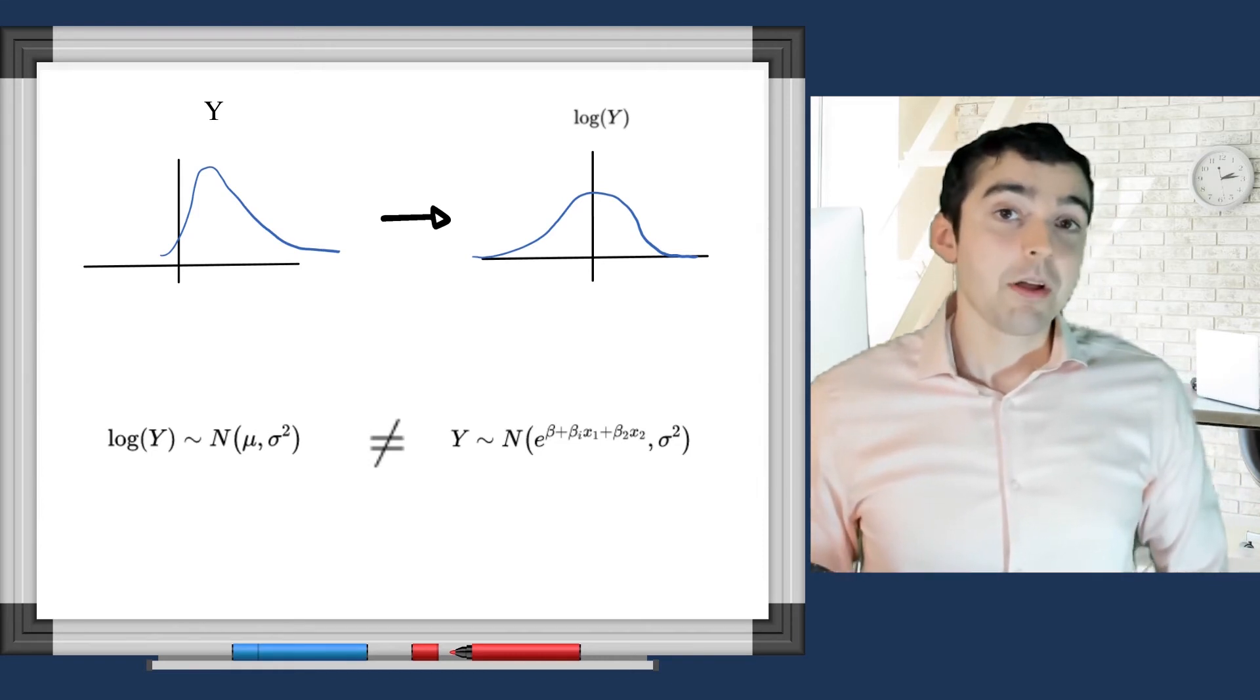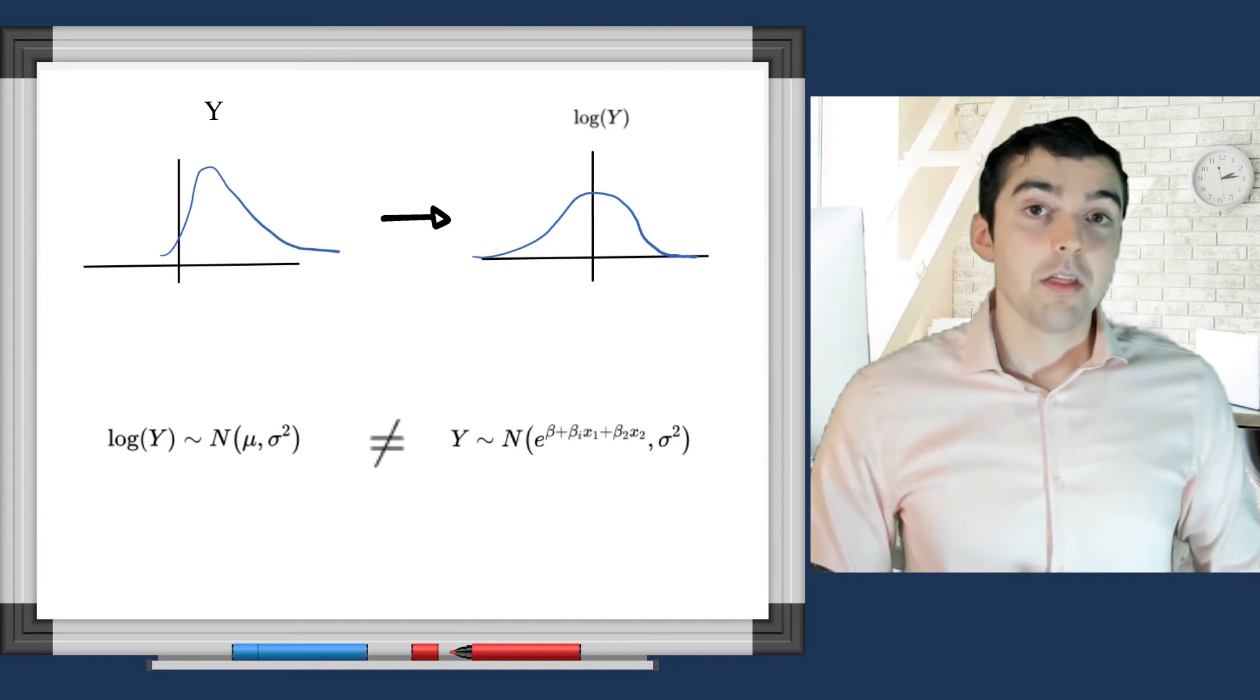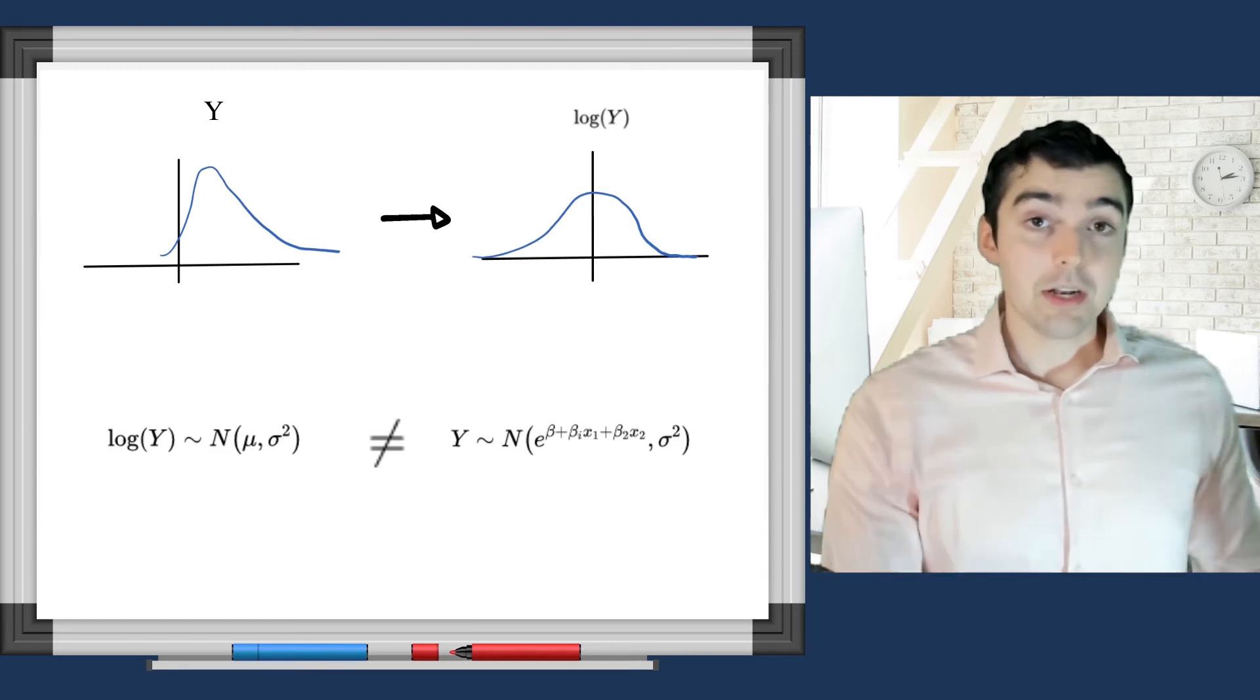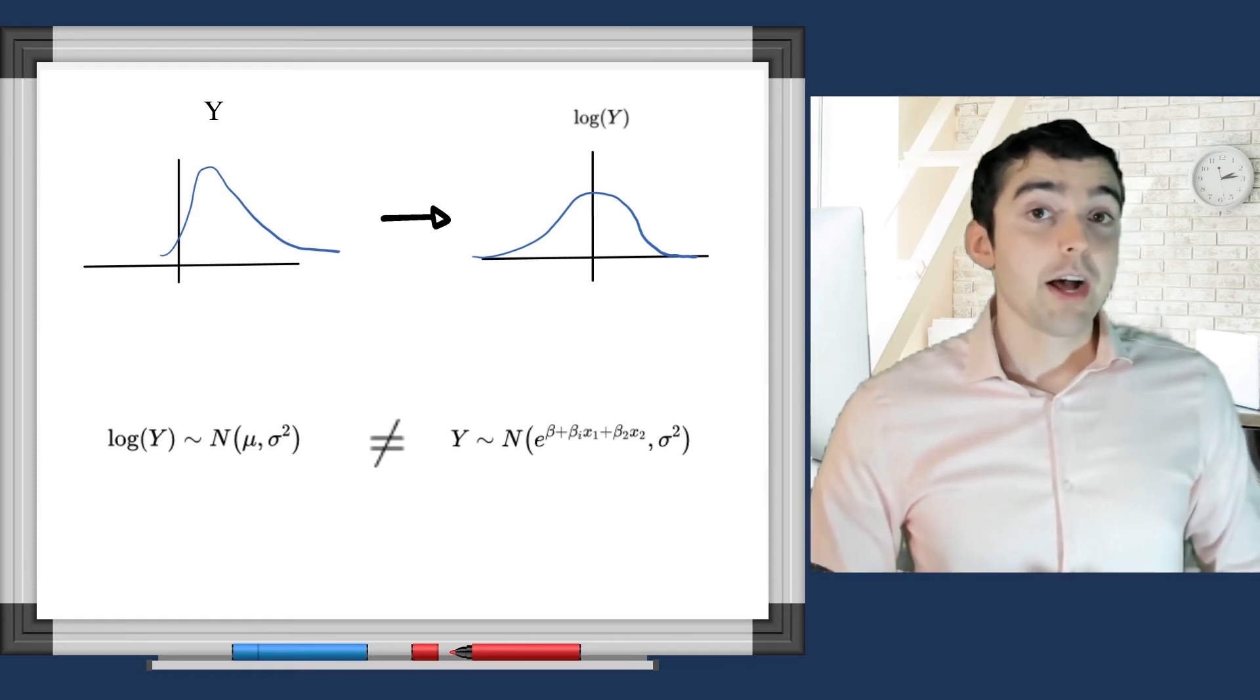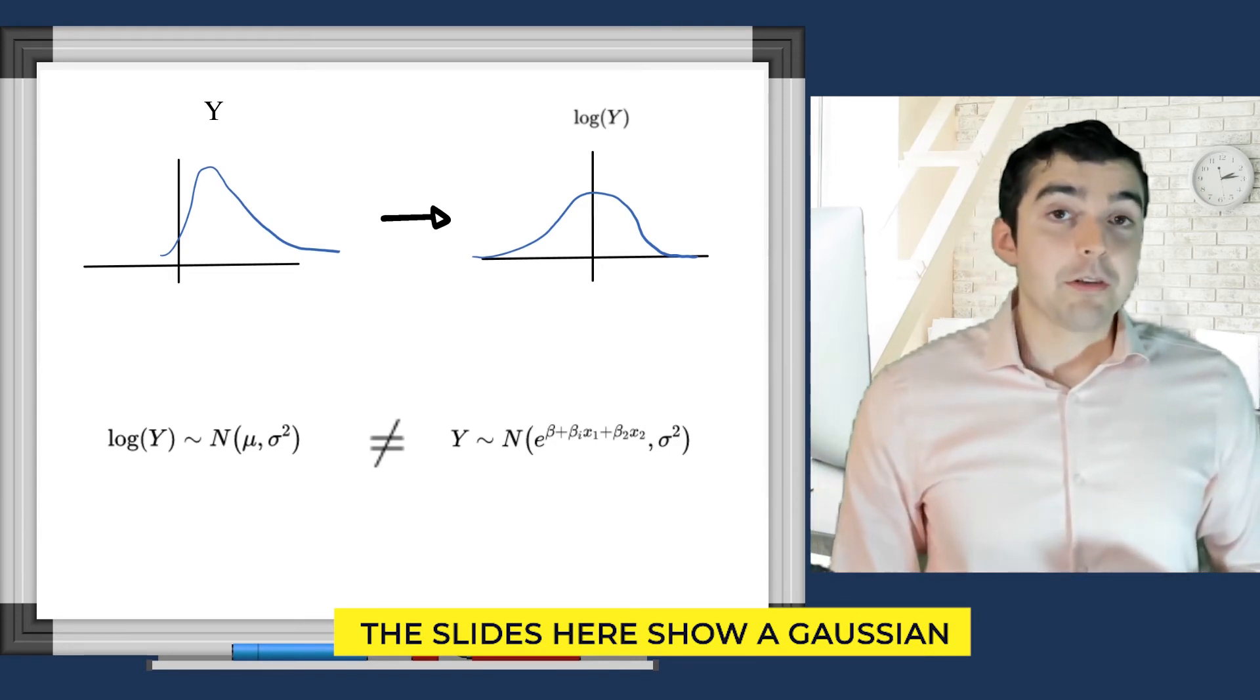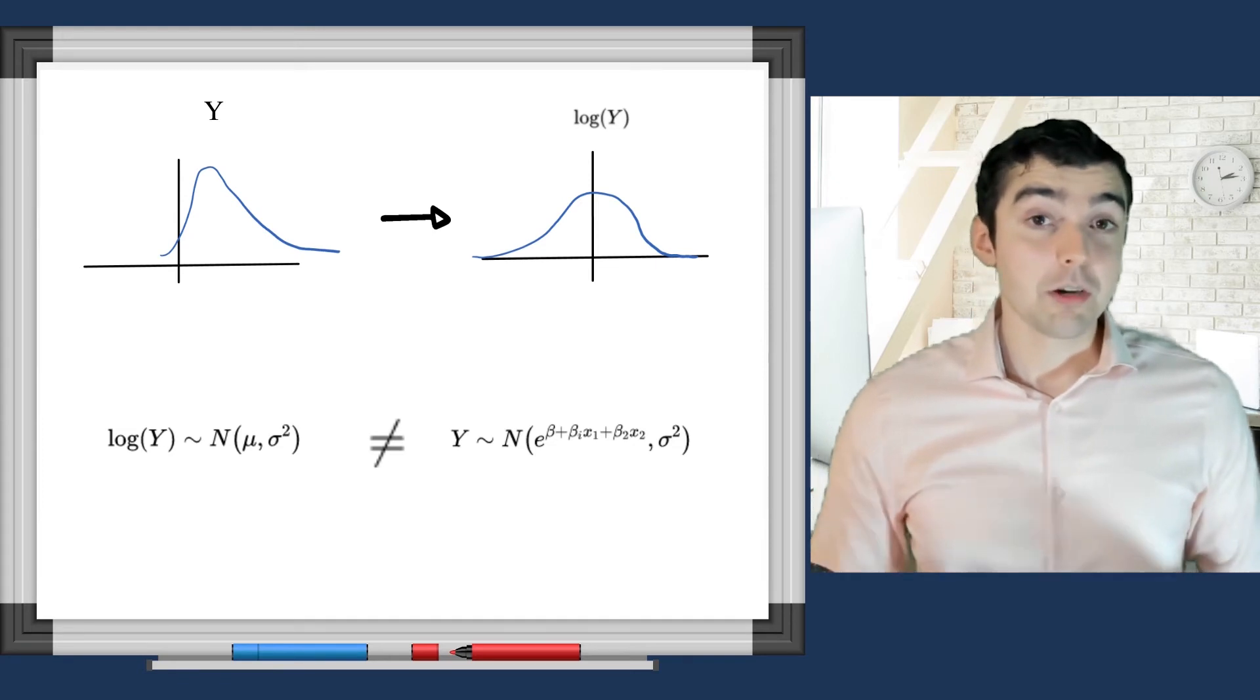In a GLM, we're saying that the mean is related to the linear predictor through the link function. In other words, if you take the log of the mean of the variable. So you could have a gamma distribution, right, that has a mean of 50. And if you take the log of that random variable, then you will get the linear predictor.